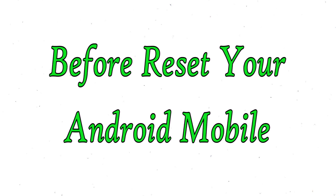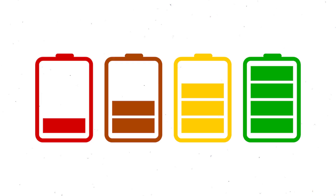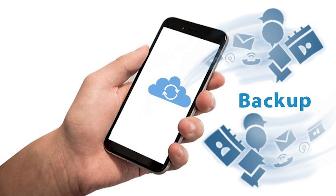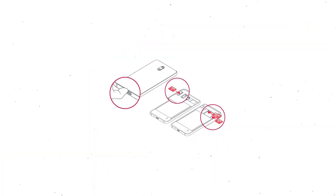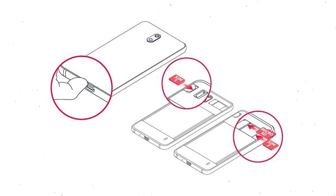Before resetting your mobile, make sure the battery is properly charged — if less than 50%, charge your mobile first. You need to make sure that the data on your device is backed up so you do not lose valuable photos or documents. Reset deletes all your mobile data, so you should back up all important data and remove your SIM and SD card.